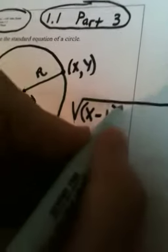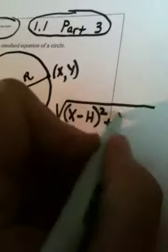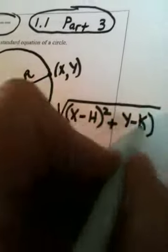Right? The distance from (h,k) to (x,y) is equal to R. So, if I apply the distance formula between these two points, I would get √[(x-h)² + (y-k)²].